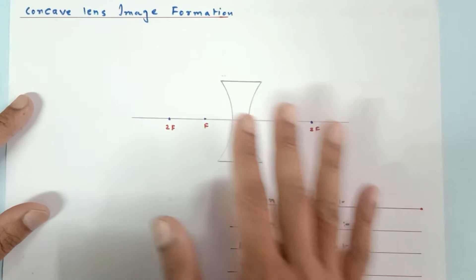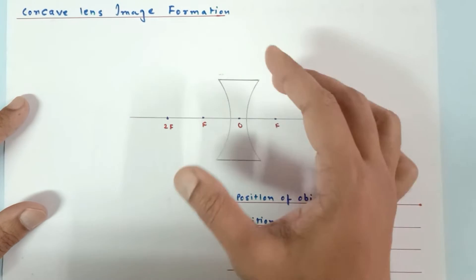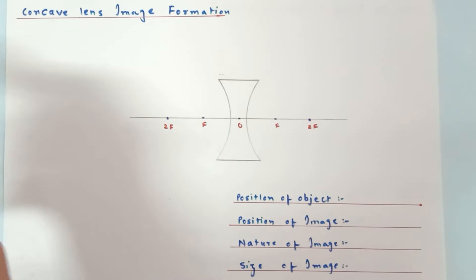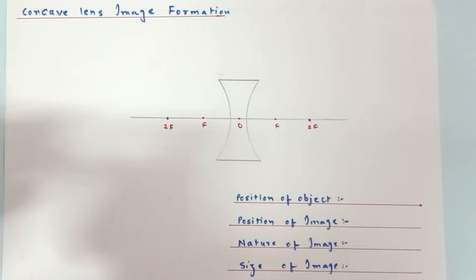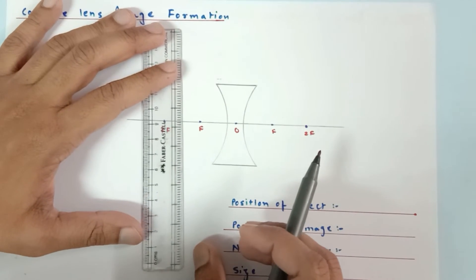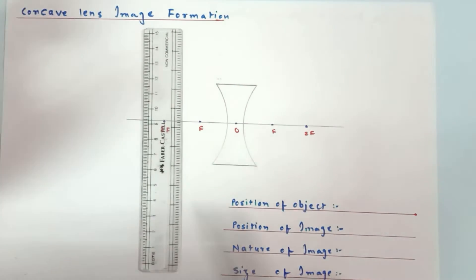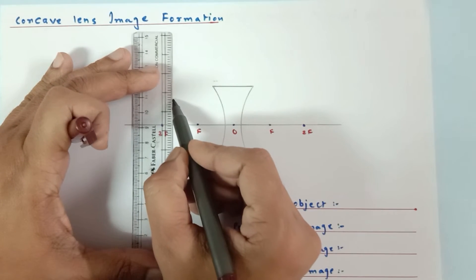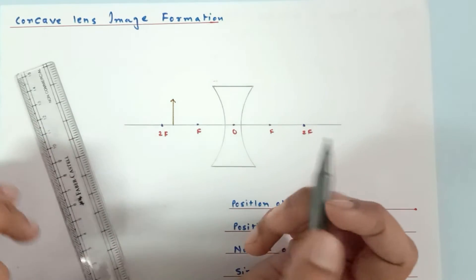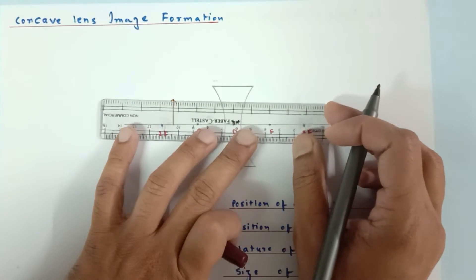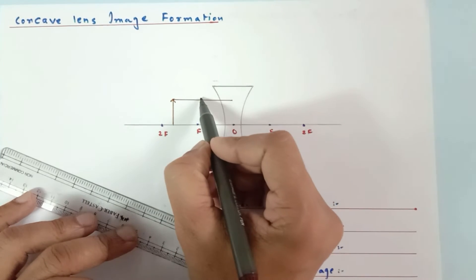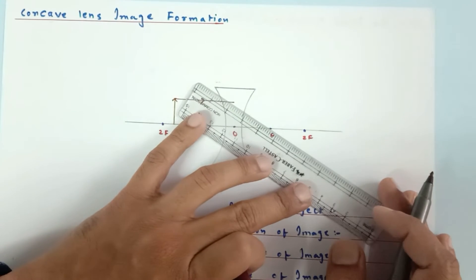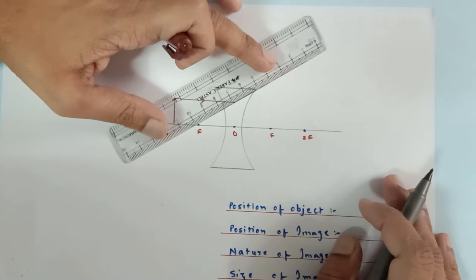Now we'll continue with image formation. I have already drawn the concave lens so we can have more discussion. We know that we can keep an object anywhere on the principal axis and the image will always form between f and O. So let me keep the object here. Now we know the rules for image formation: the first ray should be parallel to the principal axis and travel halfway into the lens.